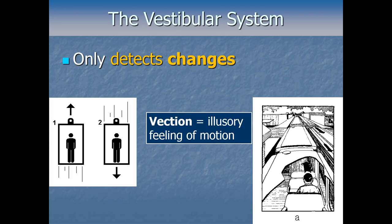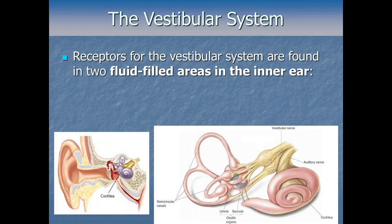So what are the actual sensory receptors for the vestibular system — the things that transduce the neural signal? There are two different sets: one for angular acceleration, like spinning and rotating, and another for linear acceleration, like going straight up, down, forward, backward, or side to side. Both sets are in fluid-filled structures in the inner ear, similar to how the cochlea is a fluid-filled spiral.